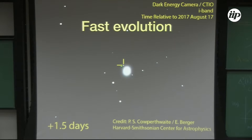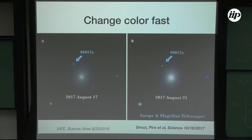The kilonova fades away quite fast and is a transient very different from any other transient in the sky. It changed color very fast: in blue you barely see it, but it is visible in red. This is August 17th — four days later it changed from blue to red. It fades away pretty fast, making it very different from any other known transient.